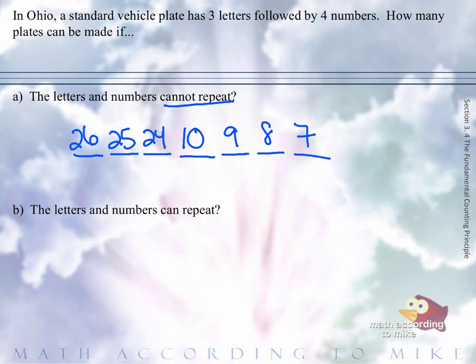Again, and is implied here because we have to pick the first number and the second and the third and the fourth and the first letter and the second letter and so on and so forth.